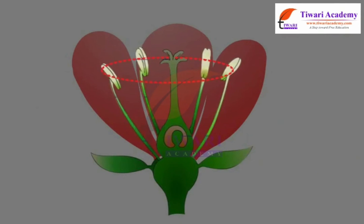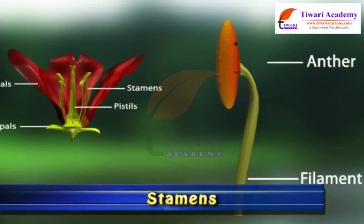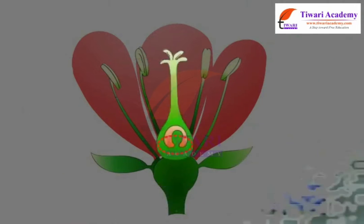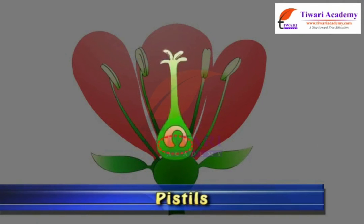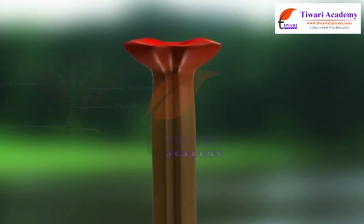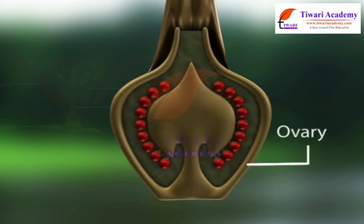The third whorl of a flower is the stamen. Stamen is made up of filament and anther. The fourth and innermost whorl of the flower is the pistil. It is made up of stigma, style, and ovary. There are ovules inside the ovary, which are bead-like structures.